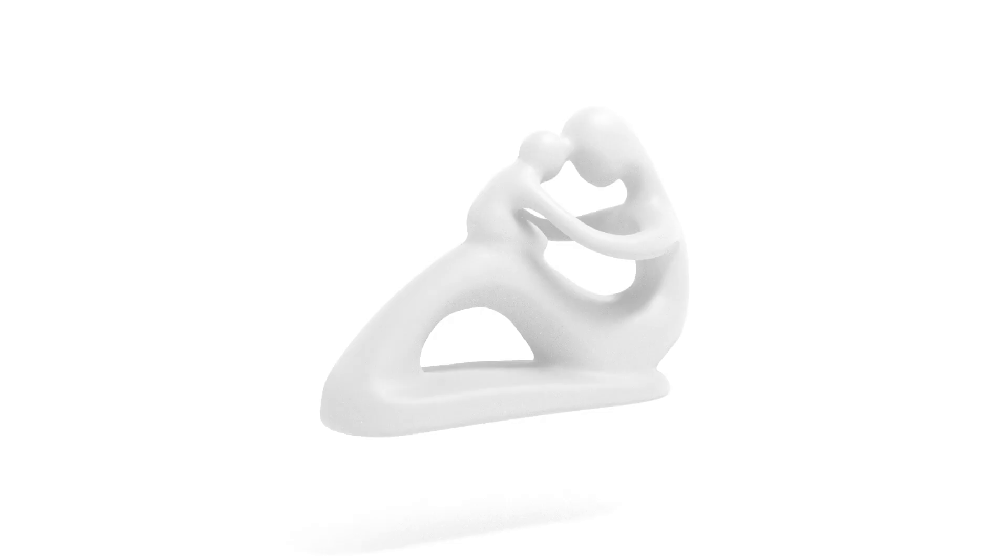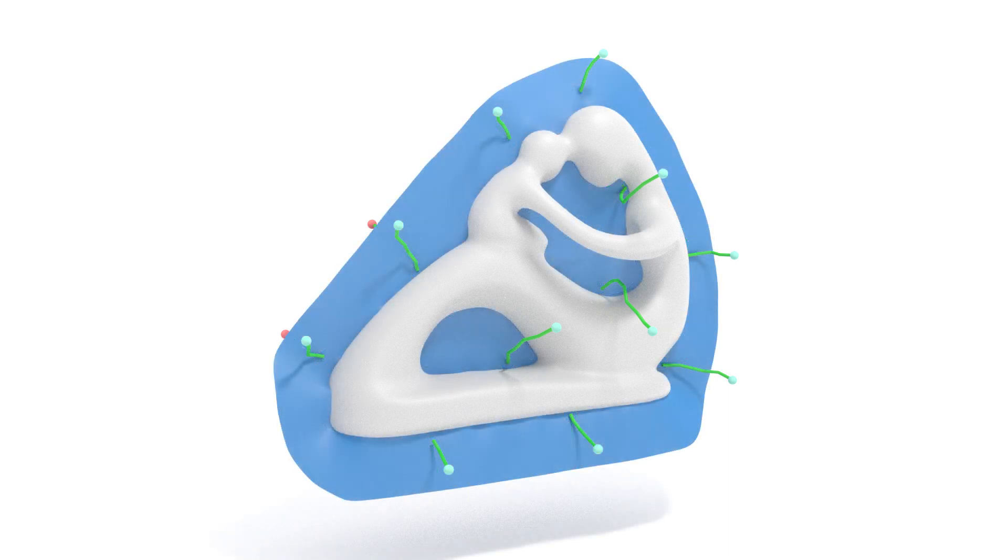Next, escape paths from the inside of the volume are computed. Whenever the paths from two adjacent points end up in different regions, we introduce a cut. These cuts separate the volume into two mold pieces.